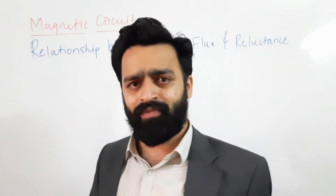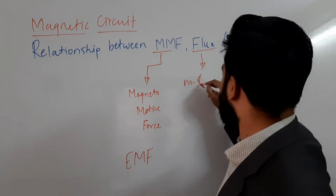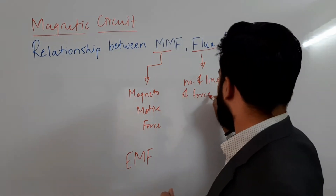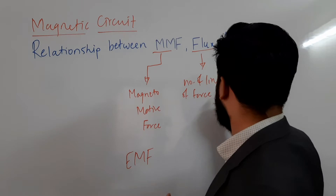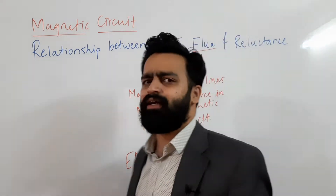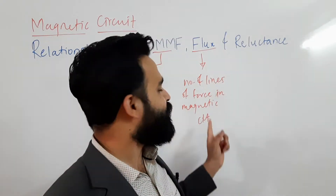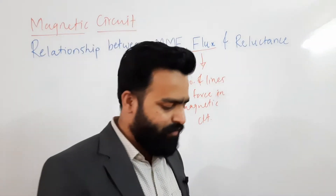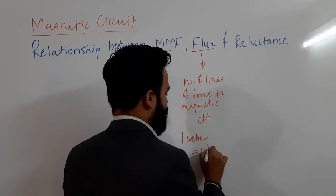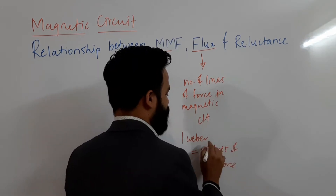Now coming to the second point — flux. Flux is the number of lines of force. As explained in the previous video, if you represent a magnetic circuit by lines of force, then flux is simply the number of lines of force in that magnetic circuit. One Weber of flux is equal to 10 to the power 8 lines of force. So flux is said to be one Weber if there are 10^8 lines of force in the magnetic circuit.